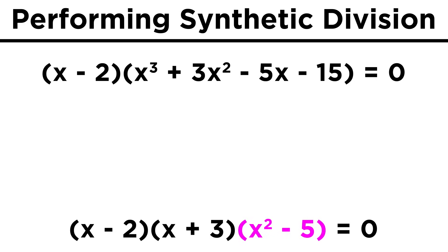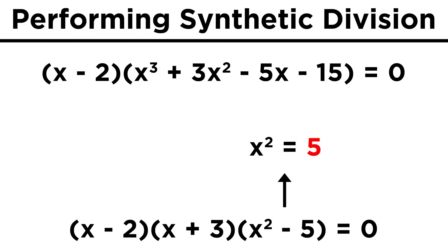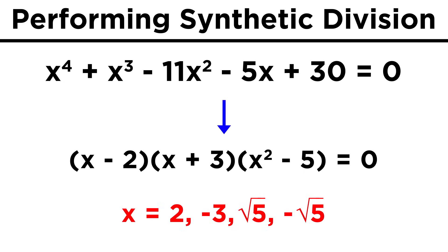That last bit is easy to solve in a separate equation. We just bring five over here, take the square root, and we get plus or minus root five. That means we have successfully found all four solutions to this original quartic equation, and those are two, negative three, root five, and negative root five.